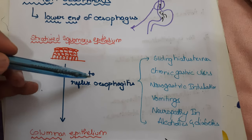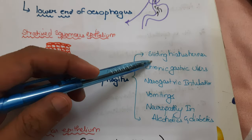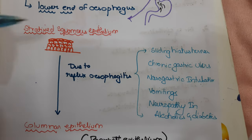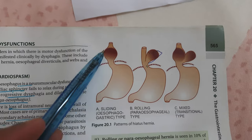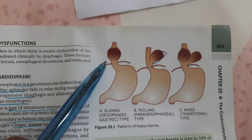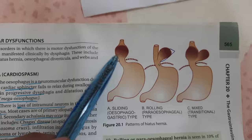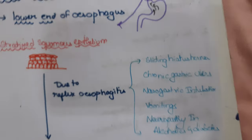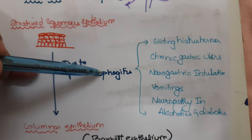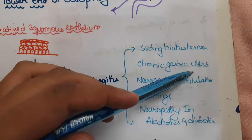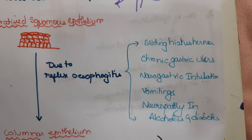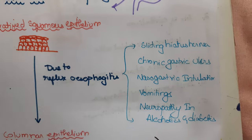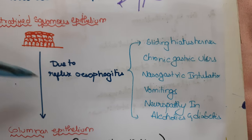Reflux esophagitis is caused by sliding hiatus hernia. As shown in the last video, in sliding hiatus hernia, part of the stomach protrudes through the diaphragm in a bell shape. This condition can cause reflux esophagitis and chronic gastric ulcers.